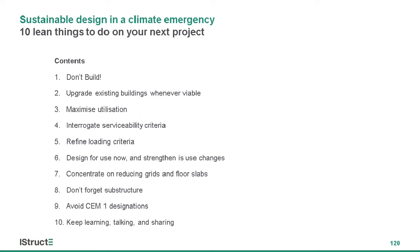I think that's a really key one. Carbon emissions that are emitted now are much more important and much more damaging than carbon emissions that may be released in the future. Number seven: concentrate on reducing your grids and floor slabs. Number eight: don't forget substructure — that's a really key one too.